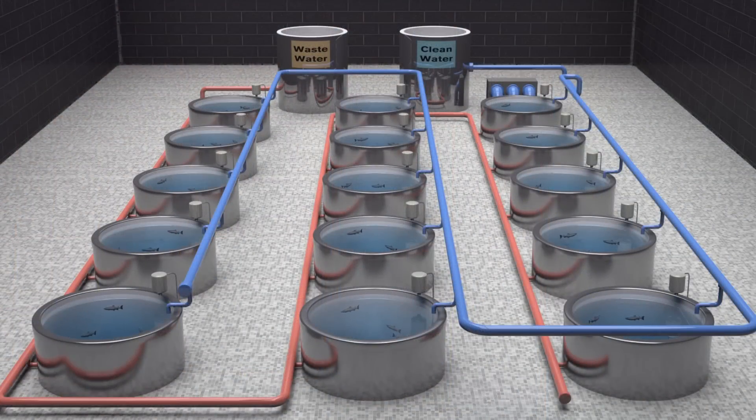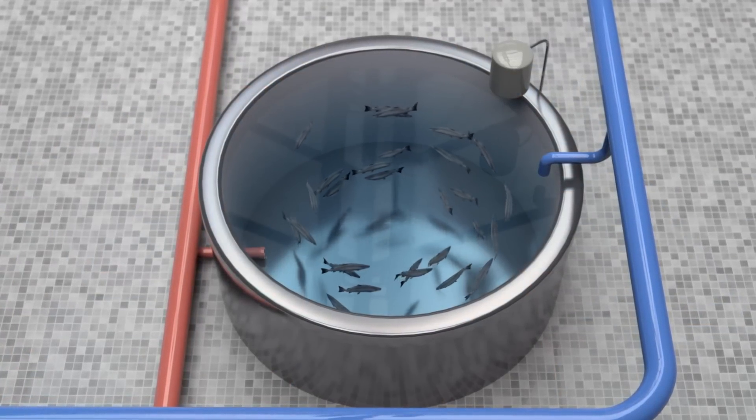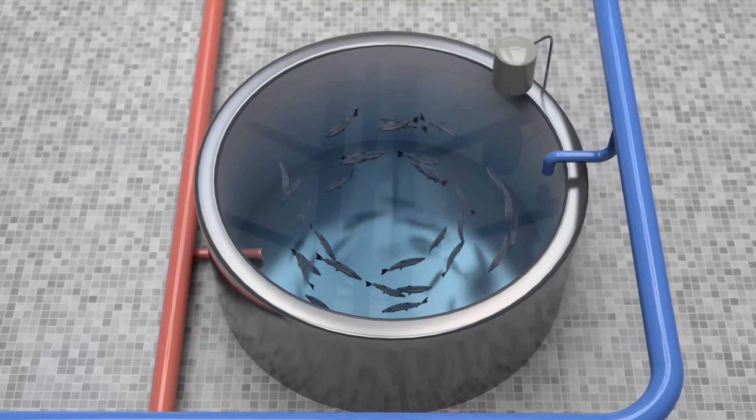There are ways to mitigate some of these concerns. Many types of seafood can be farmed in systems that are less open to the environment, like land-based recirculating tanks.